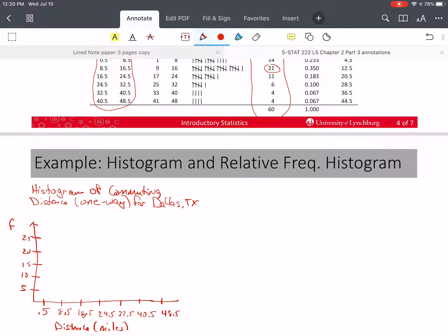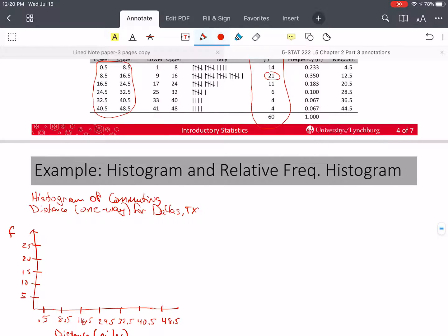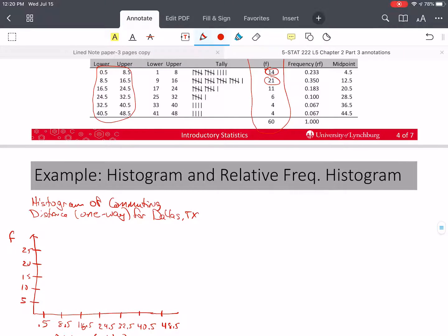So the first bar needs to be at the height of 14. See, my first bar has a frequency of 14. So I'm going to say that 14 is about there. And I'm going to do my best to draw a nice straight bar.